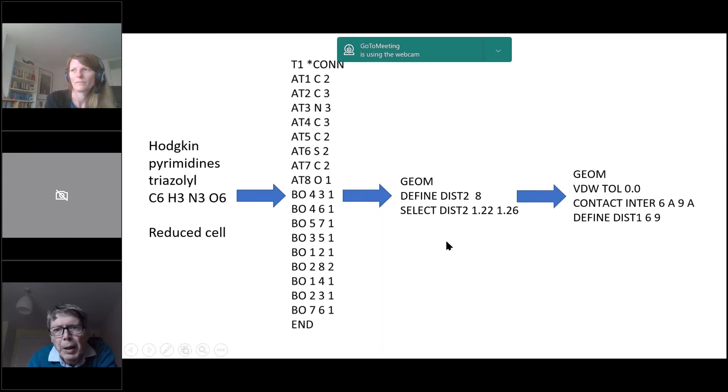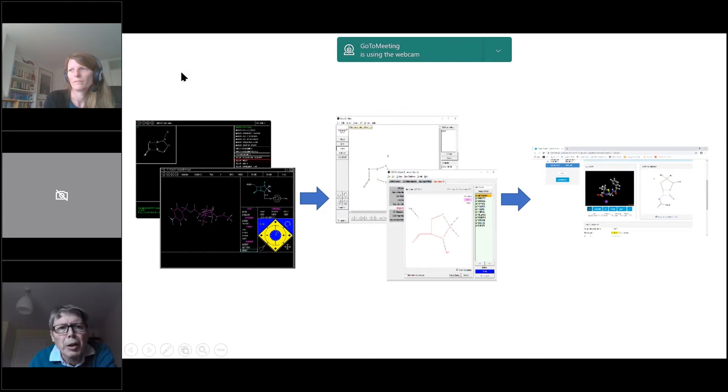Then came the ability to constrain various aspects of intramolecular geometry during the search. It was about this time that I first joined the CCDC. Another big step forward was the introduction of the ability to search for intermolecular contacts. As you will deduce from that slide, that was all driven by command line.